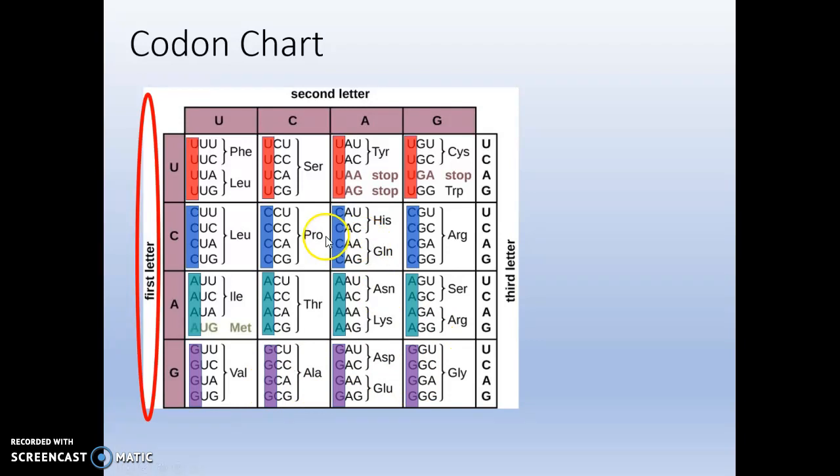How do we figure out the cell? Think of this entire chart like a multiplication table. Once you figure out your first letter and what row, once you know your second letter, you can narrow down which cell it's in. And then once you figure out your third letter, you can figure out exactly which of the four amino acid codes will correspond to your amino acid. So now, let's do this second letter.